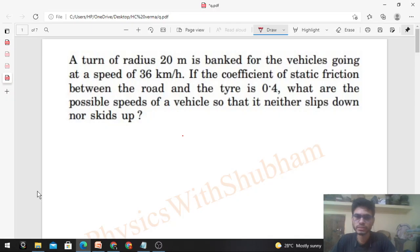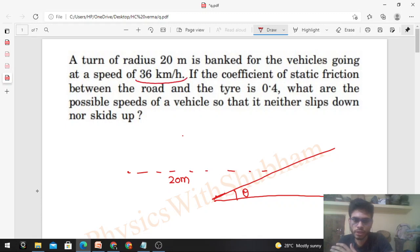Okay, hi everyone. Today let's discuss this interesting problem. A turn of radius 20 meter is banked for vehicles going at a speed of 36 kilometer per hour. If the coefficient of friction between the road and the tire is 0.4, what are the possible speeds of a vehicle so that it neither slips down nor skids up?